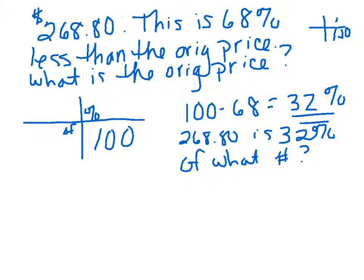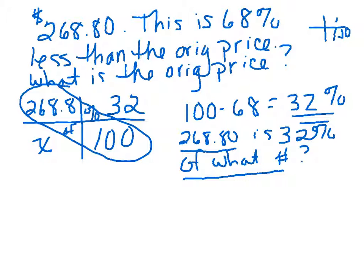Do we have a percent? Yes, we do: 32. Of what number? That's telling us in our 'of' box we have an X because we don't know. And the $268.80 goes here.